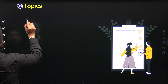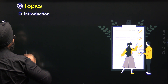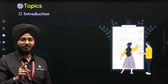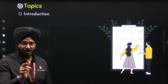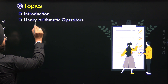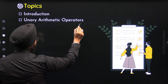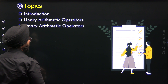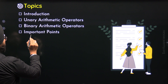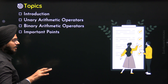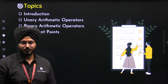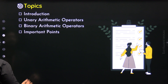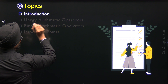The first topic is Introduction to Arithmetic Operators. First, I will introduce you to arithmetic operators. Then we will move to the next topic, where we will understand unary arithmetic operators. After this, we will understand binary arithmetic operators. And then finally, I will give you some important points associated with arithmetic operators. Let's start with the first one, Introduction to Arithmetic Operators.